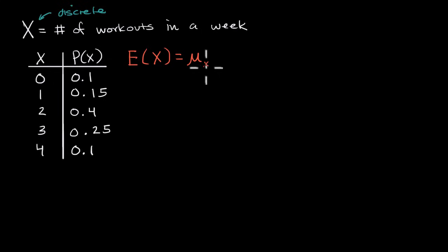But how do we actually compute it? To compute this, we essentially just take the weighted sum of the various outcomes, and we weight them by the probabilities. So for example, the first outcome here is zero, and we'll weight it by its probability of 0.1. So it's zero times 0.1.